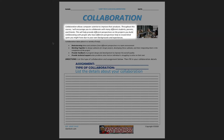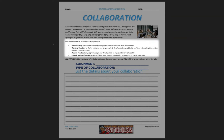Collaborating with people who have different perspectives helps to reveal blind spots you may have due to your own backgrounds and experiences. Collaboration takes place in a variety of ways. You can collaborate by brainstorming ideas and solutions from different perspectives in a team environment. You can also collaborate by working together to design subtasks of a larger project, developing these subtasks, and then integrating them into the completion of the project.